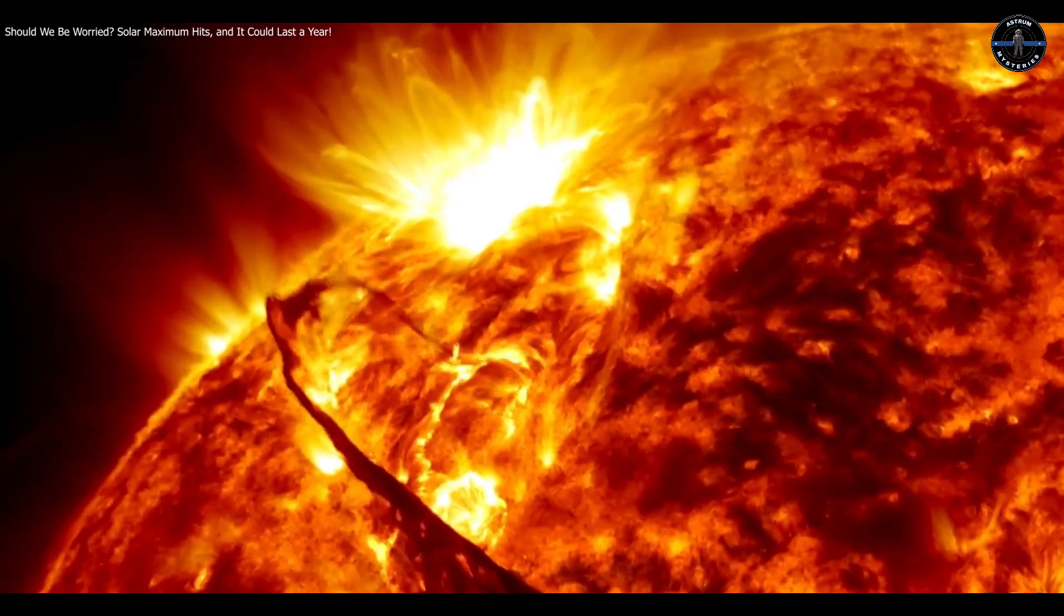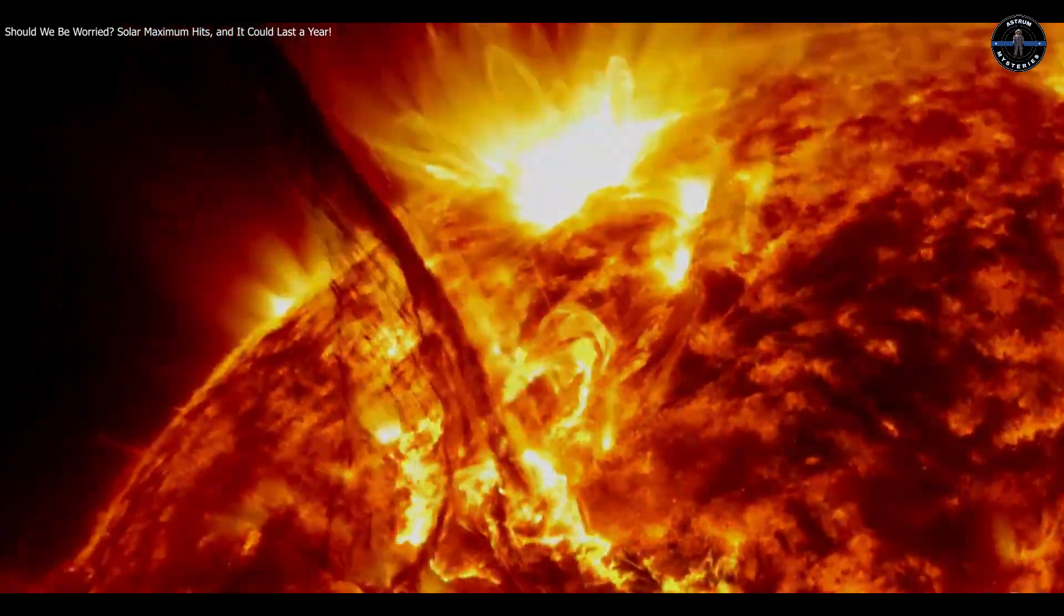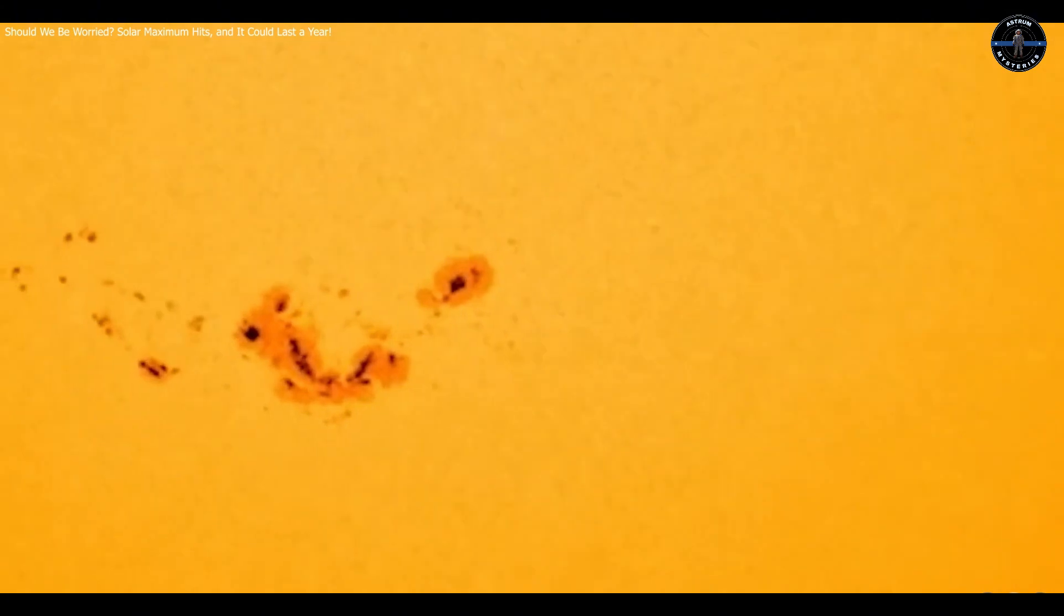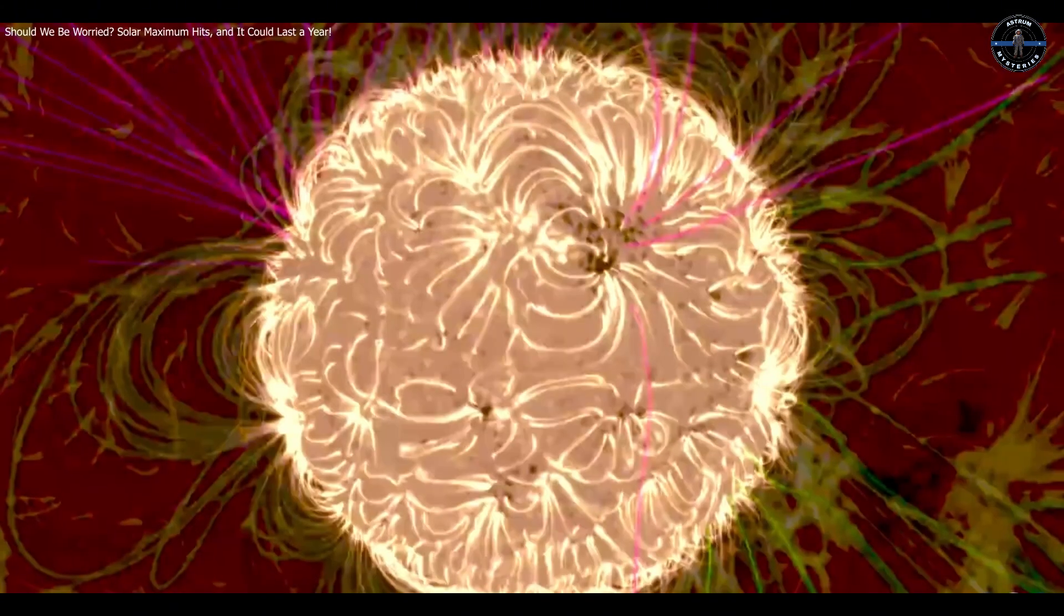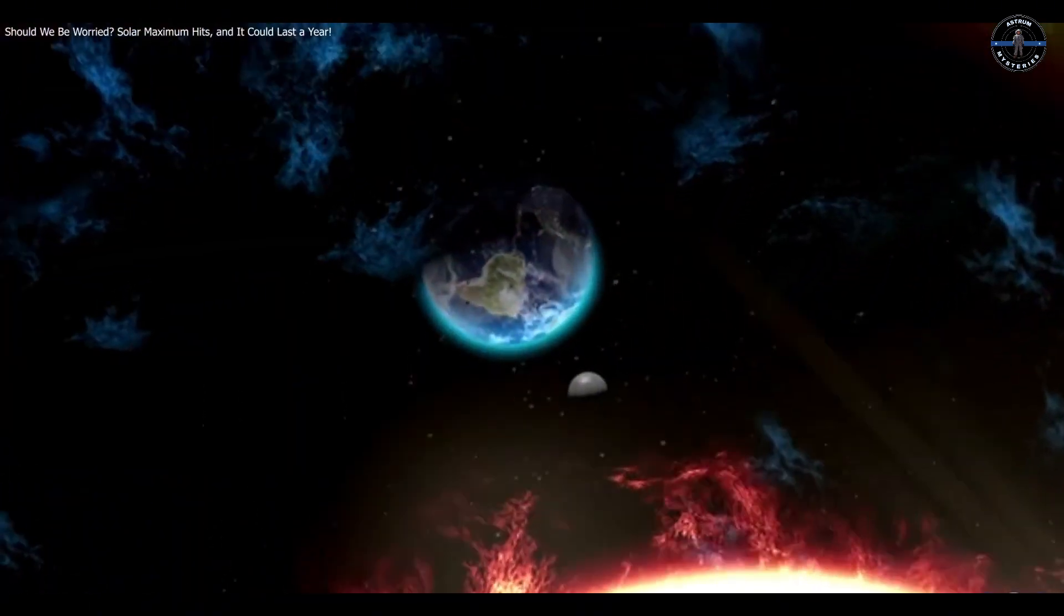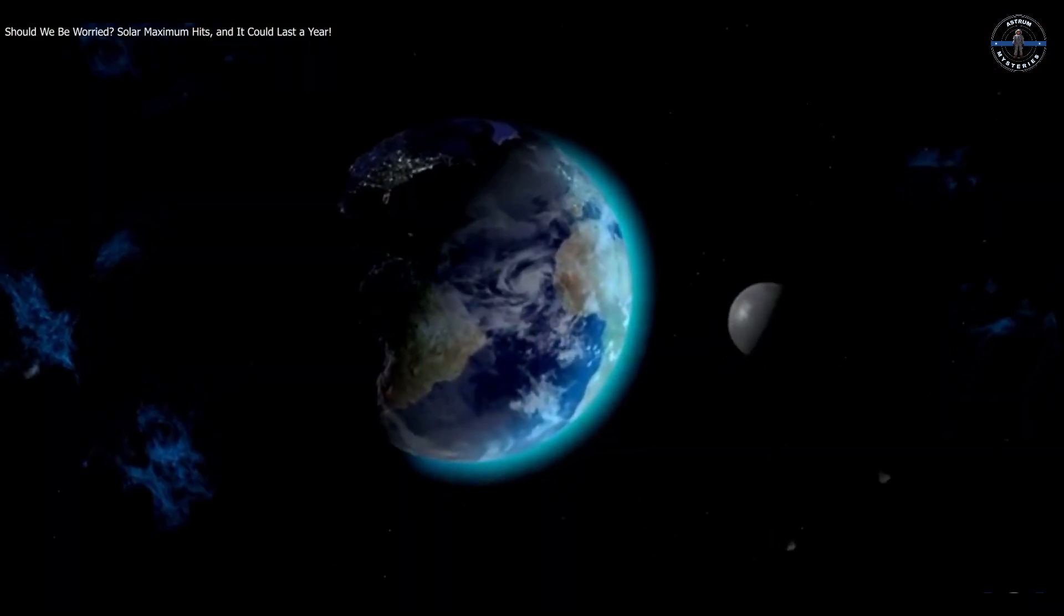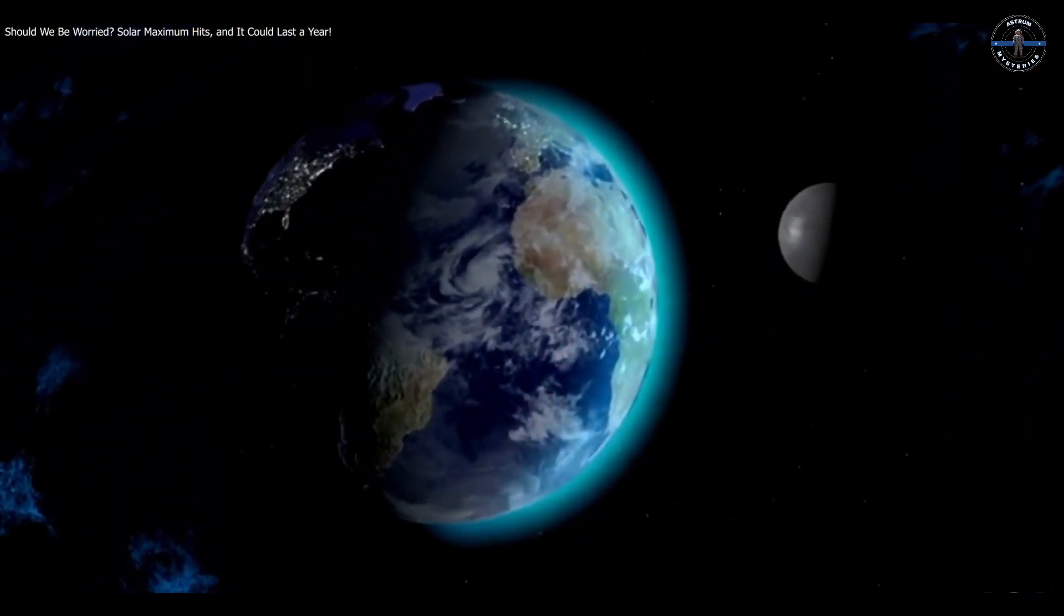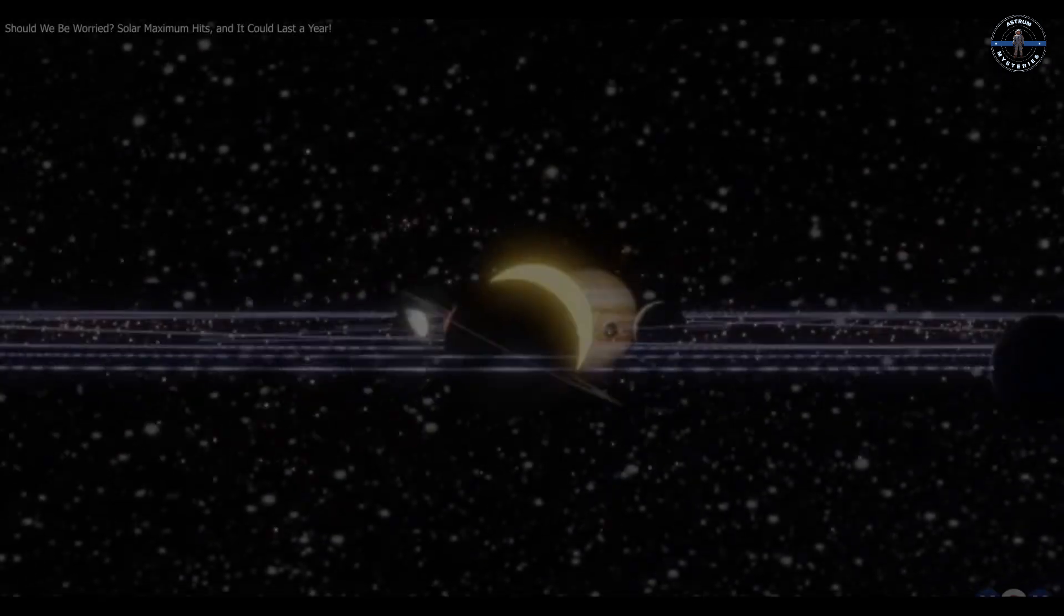This period of wild activity is called the solar maximum, a time when the Sun is at its most fierce, its surface dotted with sunspots, and its energy unleashing violent solar flares and coronal mass ejections. And guess what? We're in the thick of it right now. Buckle up as we dive into this thrilling cosmic rollercoaster.